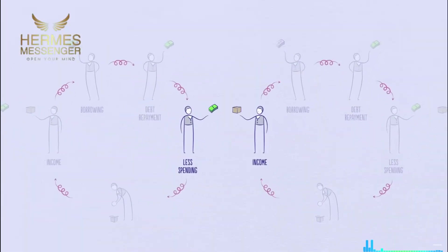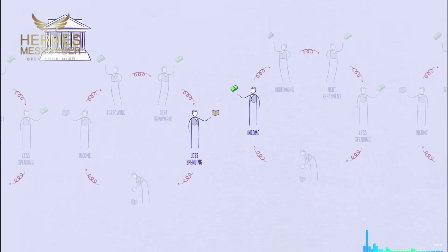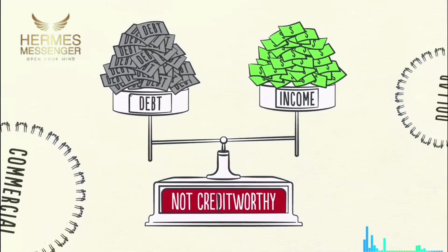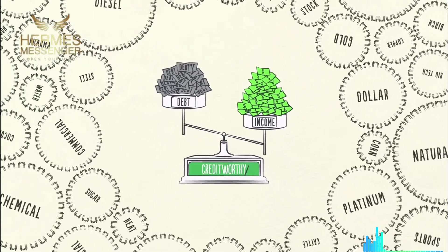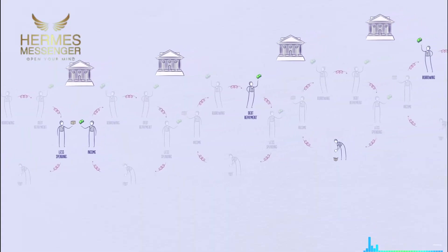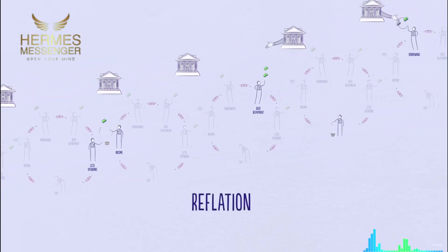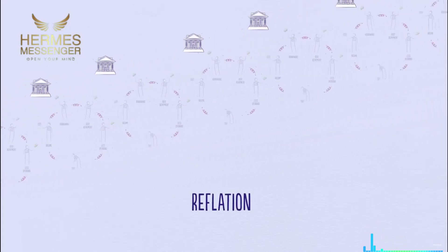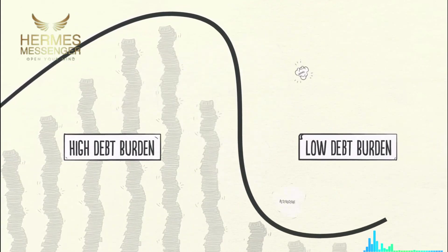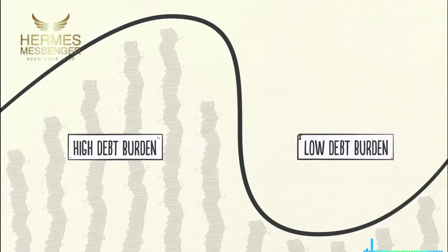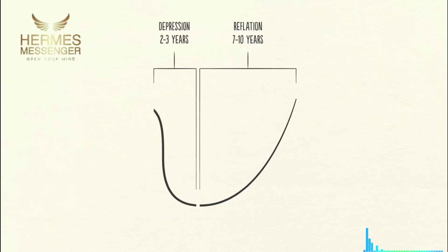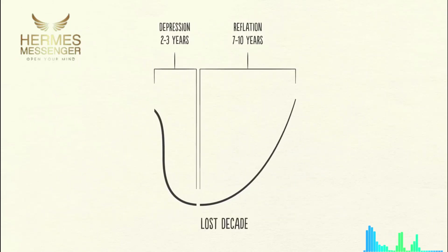When incomes begin to rise, borrowers begin to appear more creditworthy. And when borrowers appear more creditworthy, lenders begin to lend money again. Debt burdens finally begin to fall. Able to borrow money, people can spend more. Eventually, the economy begins to grow again, leading to the reflation phase of the long-term debt cycle. Though the deleveraging process can be horrible if handled badly, if handled well, it will eventually fix the problem. It takes roughly a decade or more for debt burdens to fall and economic activity to get back to normal — hence the term, lost decade.